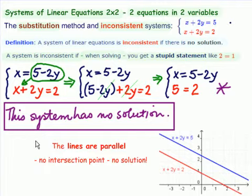This is what we write down when given solve the system of equations. Do this normally. And when we get our contradiction, our stupid statement, we write down this system has no solution. Or we can write down the system is inconsistent.